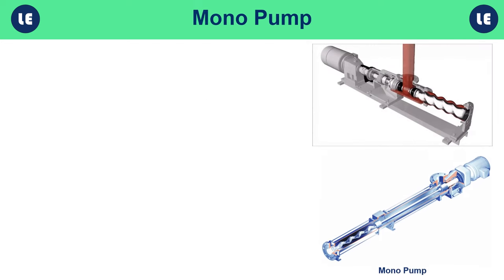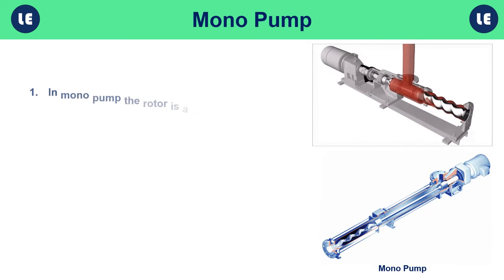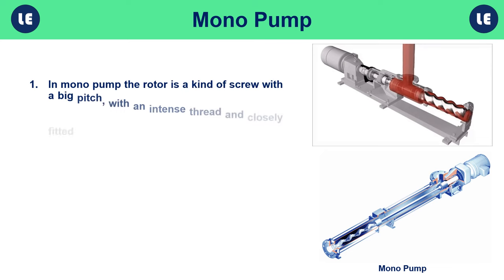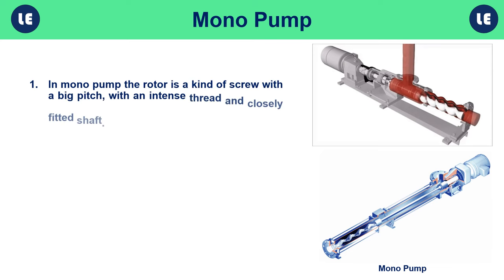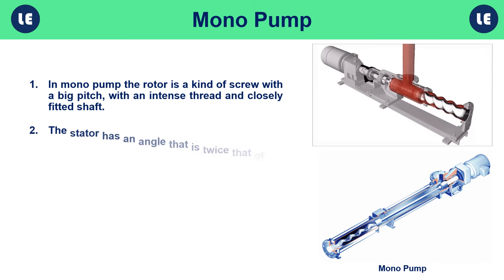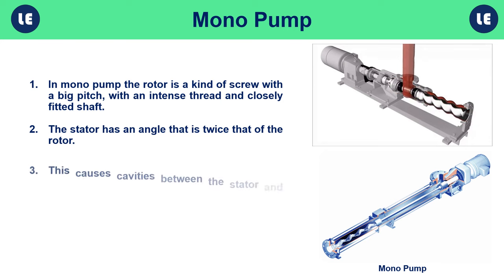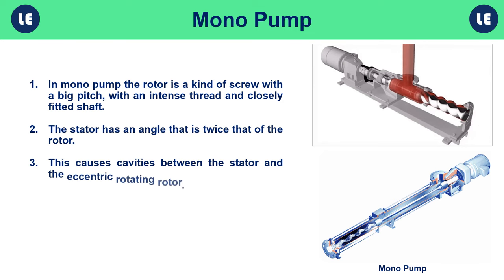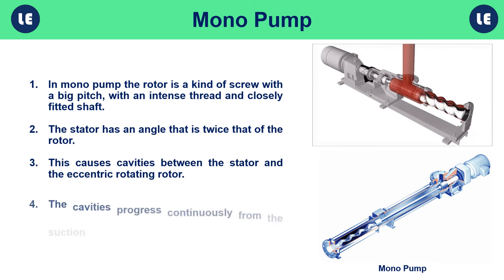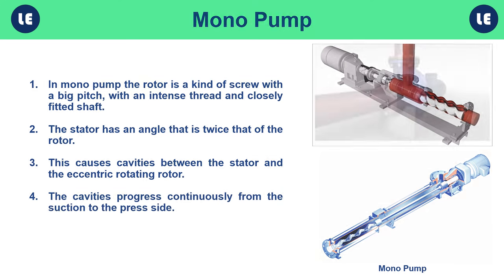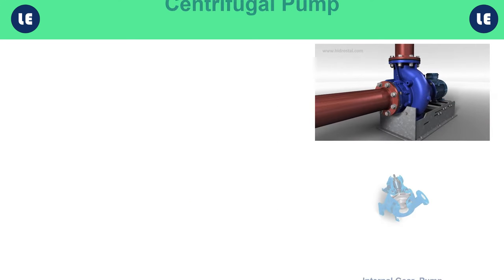In a mono pump, the rotor is a kind of screw with a large pitch, an intense thread, and a closely fitted shaft. The stator has an angle that is twice that of the rotor. This creates cavities between the stator and the eccentric rotating rotor, and those cavities progress continuously from the suction to the press side.